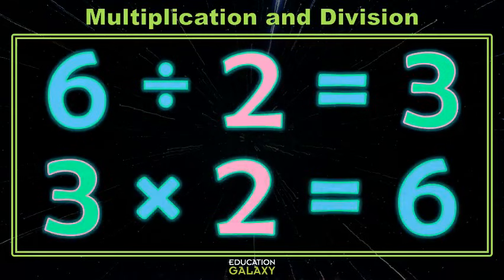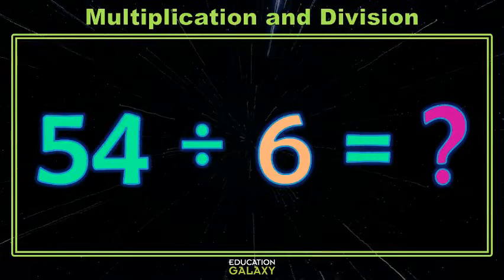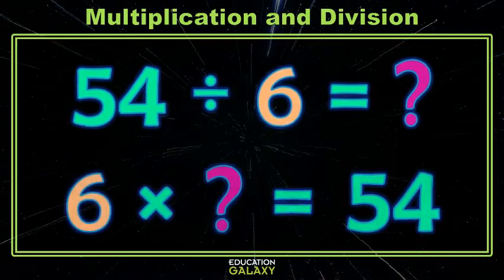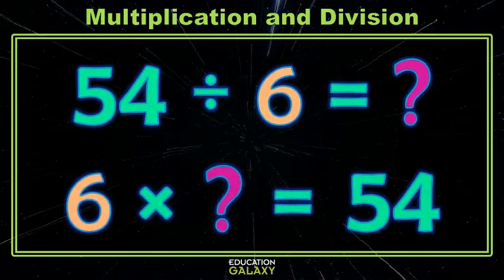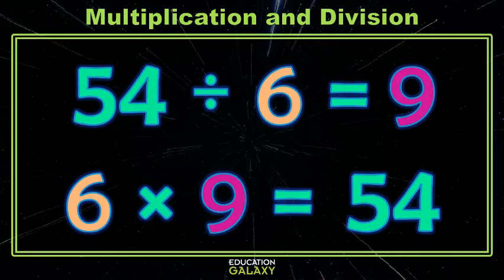Let's see if we can apply that to a problem. Here we have 54 divided by 6 equals something, and maybe we don't remember what that something is. But if 54 divided by 6 equals something, then 6 times that something equals 54. I'm sure you remember that multiplication fact, but just in case you don't, it's 9. Excellent job.